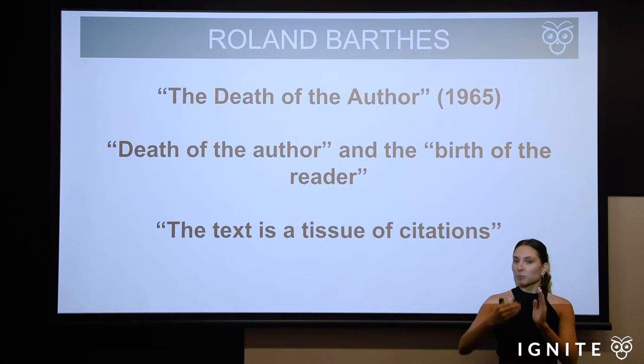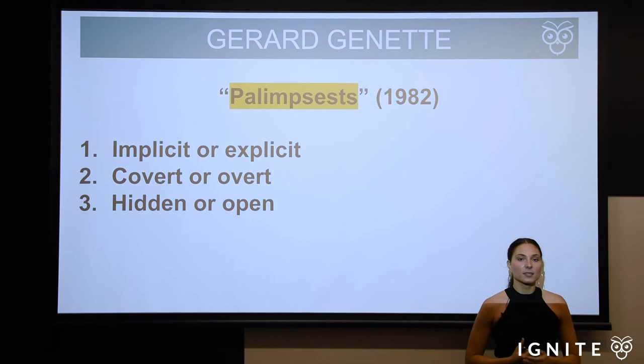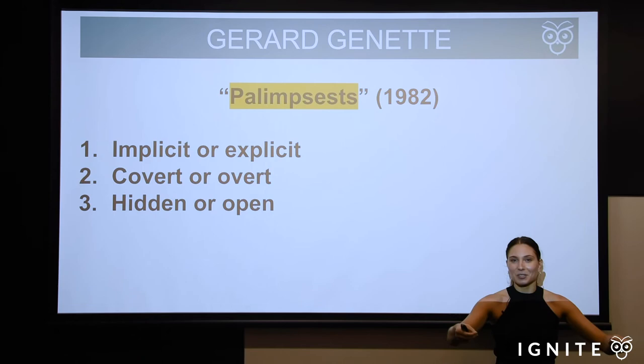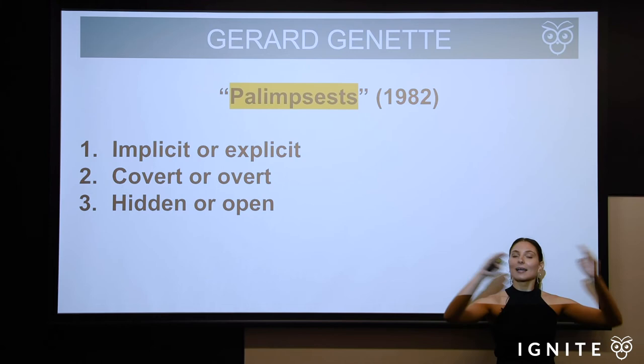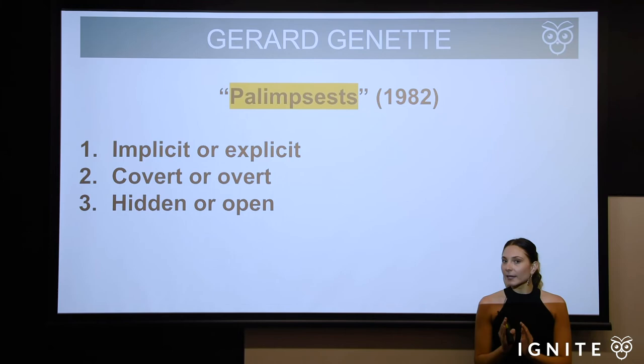The next person who comes along and actually categorizes what Barthes conveys is a guy called Gerard Genette, and his very famous text is called 'Palimpsests.' The title actually suggests a text which is an accumulation or a binding of other texts — which is essentially what intertextuality is. At this stage you should understand intertextuality as encompassing: multiple meanings in texts, texts quoting and borrowing from other texts, and the reader being the essential creator of meaning rather than the author. Genette says intertextuality can occur in three ways.